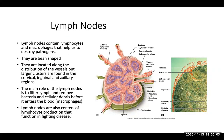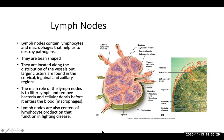Your lymph nodes will contain lymphocytes, which is a type of white blood cell involved in the immune response, and also macrophages that help destroy pathogens — anything foreign that enters the body. Lymph nodes are bean-shaped and located along the distribution of vessels, but will be found in larger clusters in the cervical, inguinal, and axillary regions. The main role of your lymph nodes is to filter lymph and remove bacteria and cellular debris before it enters the blood again, due to the role of macrophages. Lymph nodes are also centers of lymphocyte production that help the body fight disease.